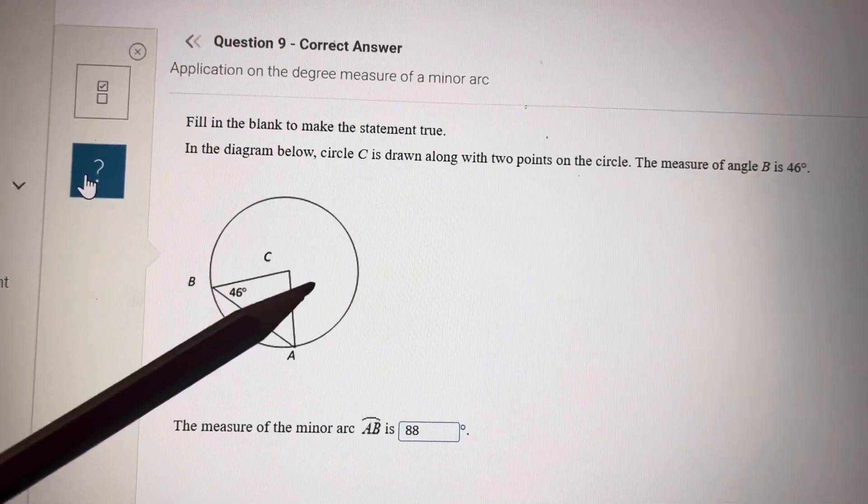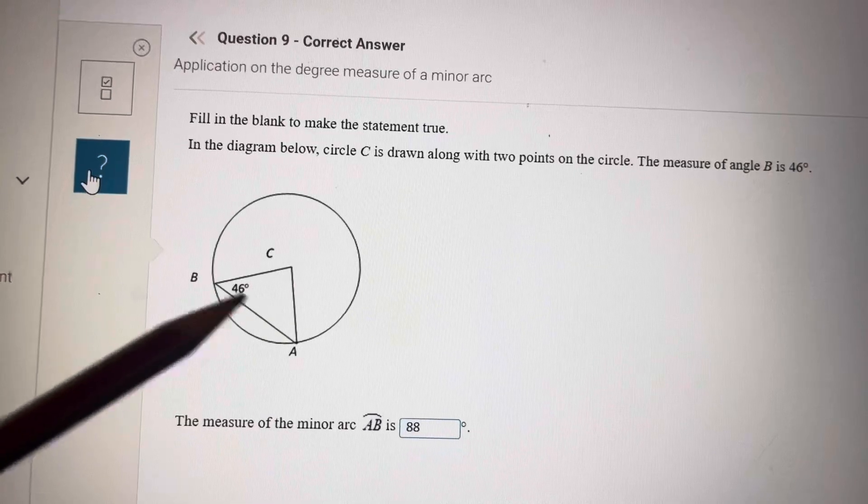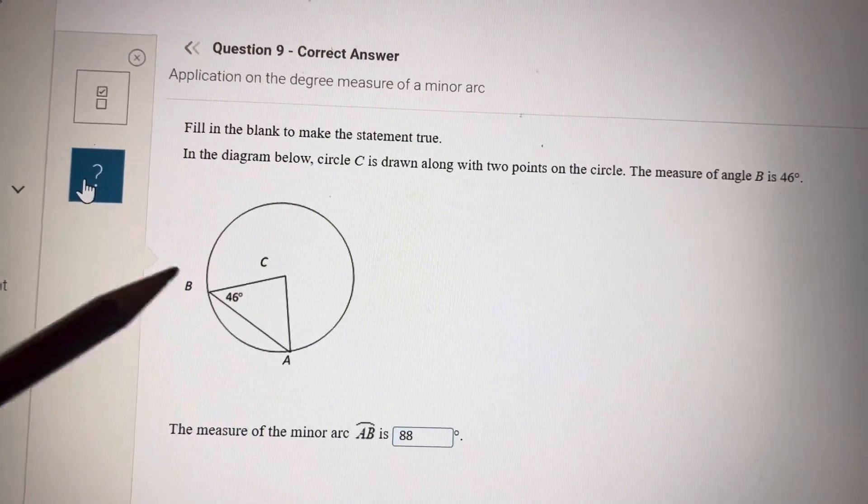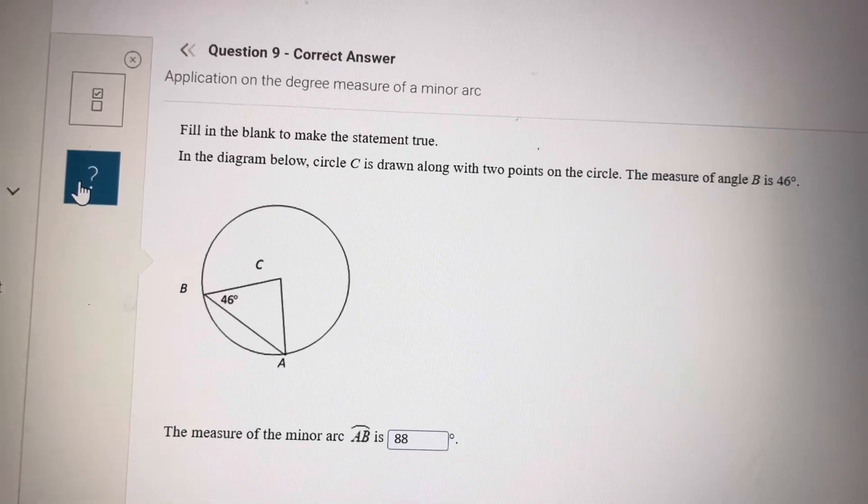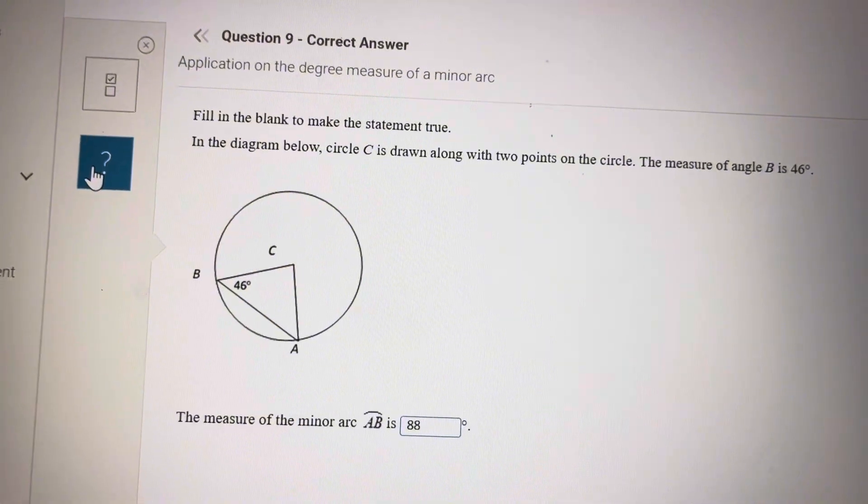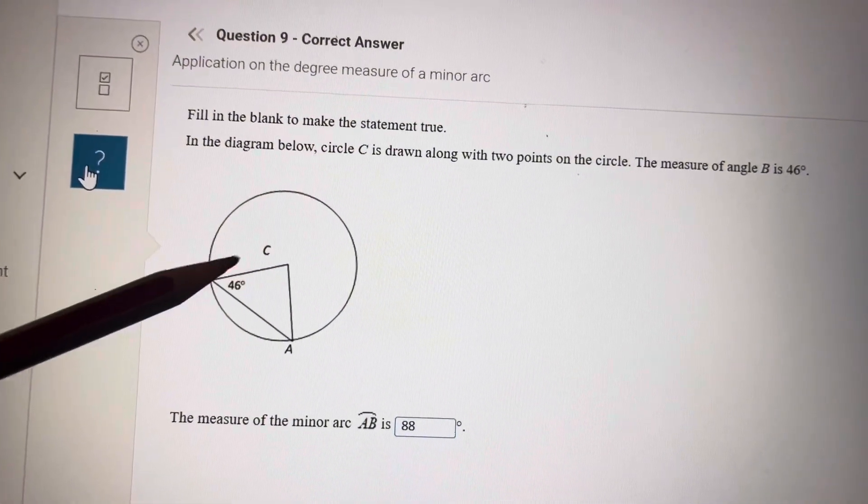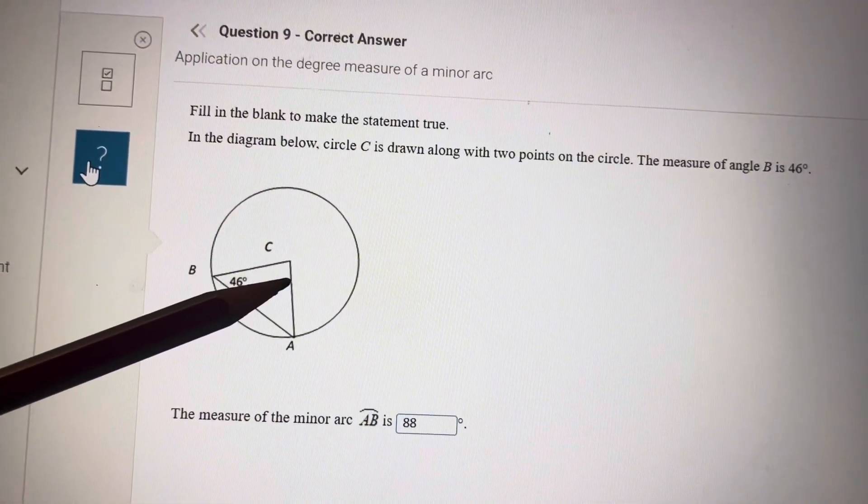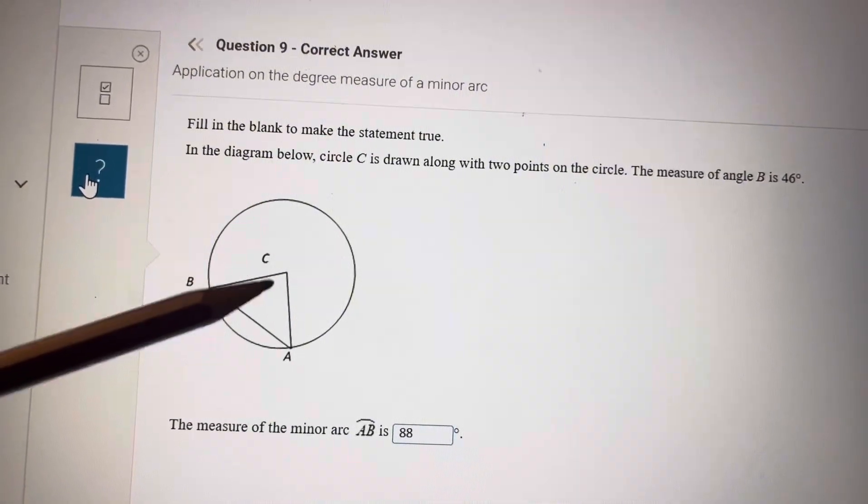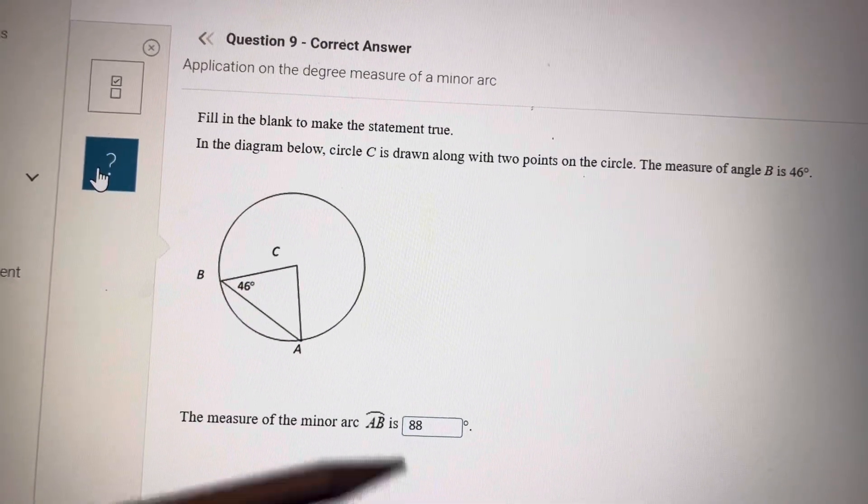In this diagram, he's giving you that the angle B is 46. And he wants the arc AB. This is a congruent triangle because these two lines are radius. So this is 46 and this is 46. 46 plus 46 is 92. So this angle will be 180 minus 92, which is 88. And the arc is equal to the central angle. So it will also be 88.